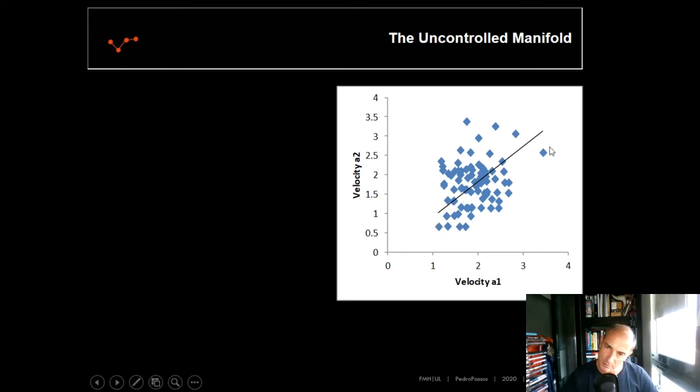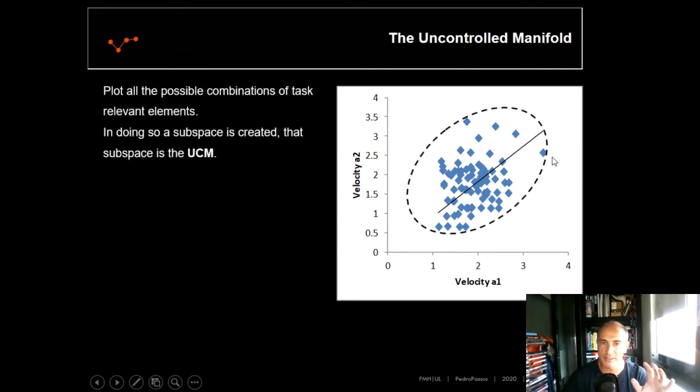And then we have this black line here which represents the task manifold. Also, we can compute the variability around, in the proximity of this task manifold. But before moving on, this cloud of dots creates a subspace. And this subspace is the UCM, the uncontrolled manifold.